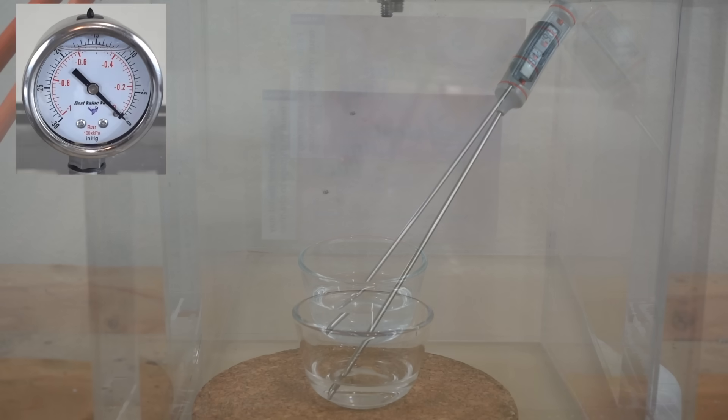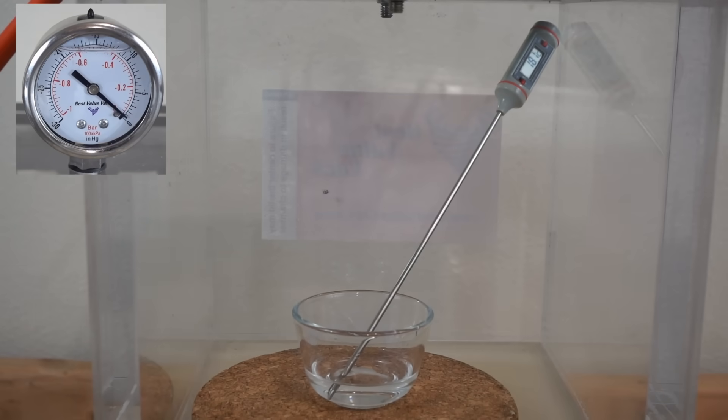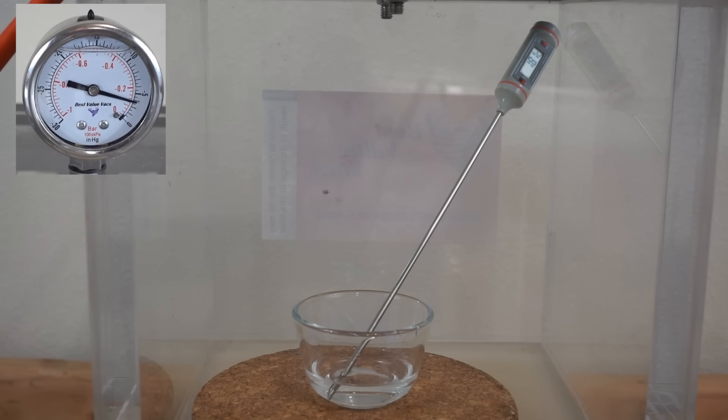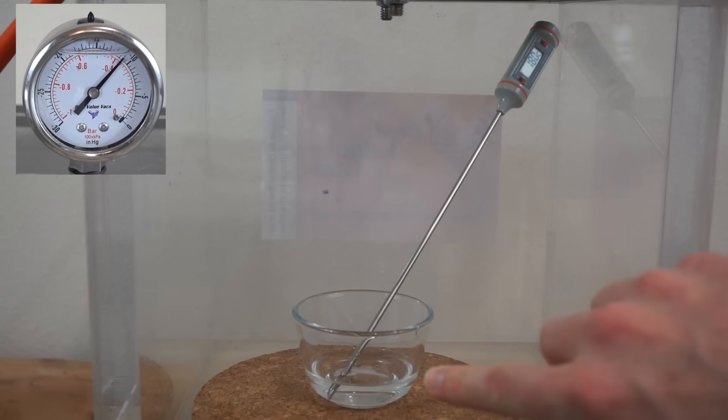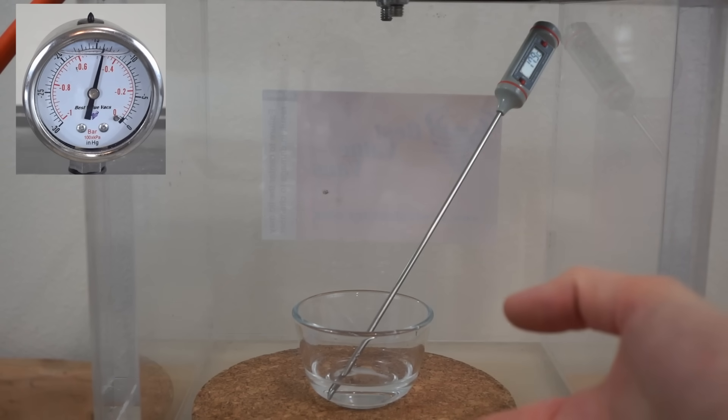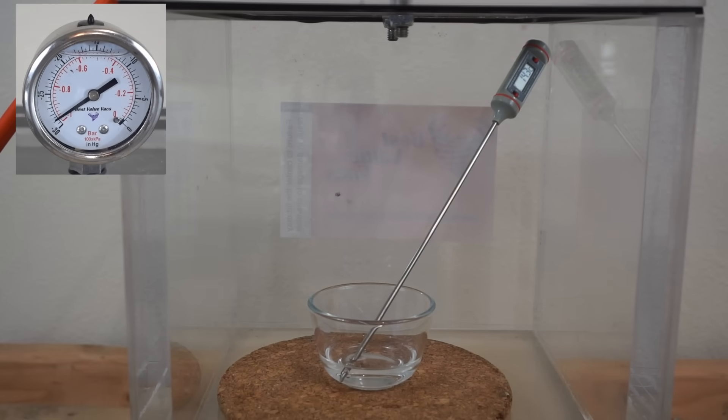So I have this pad under it. That's just to insulate the liquid so that the heat from the chamber doesn't heat up the water. Okay, we've been going about four minutes. We're at 14.3 degrees Celsius now. And you can see that it's starting to boil there.